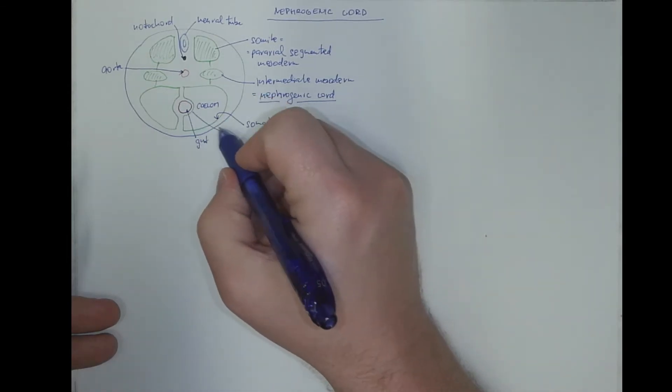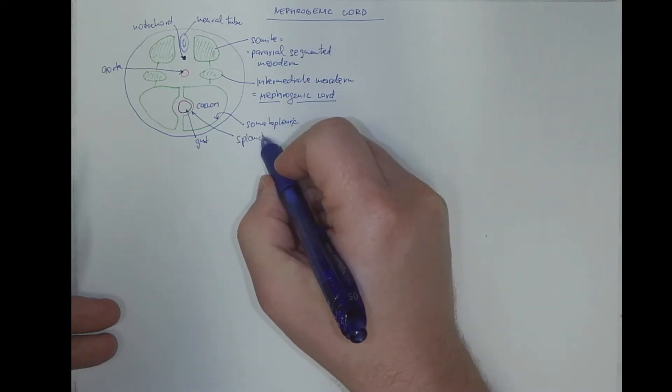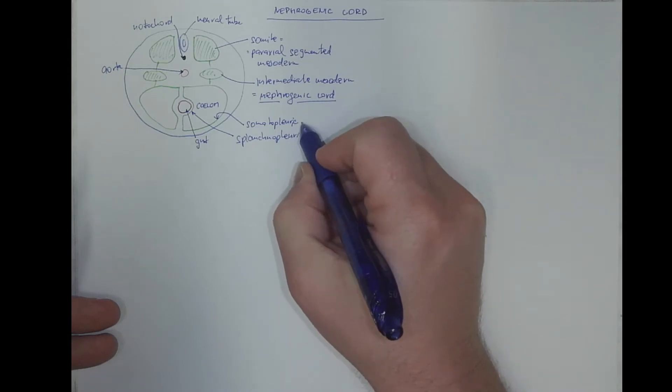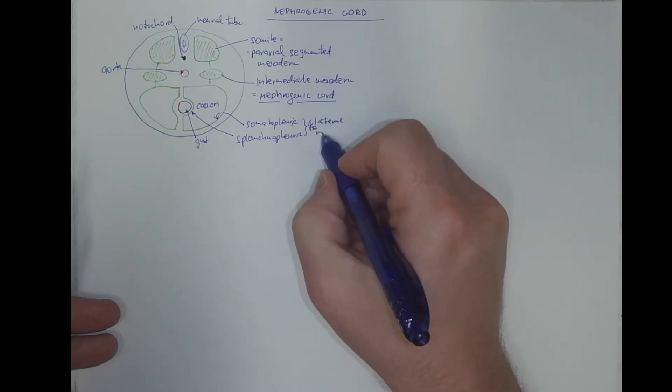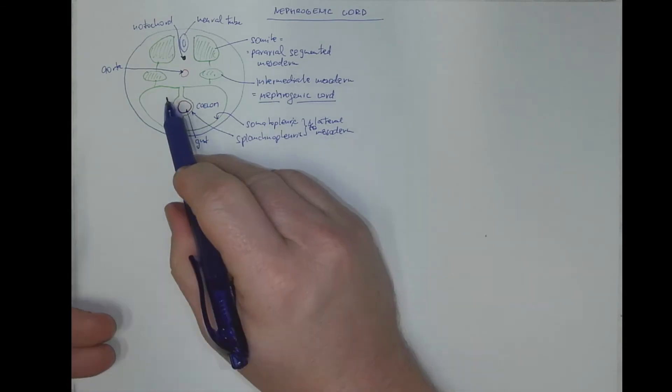And the visceral layer called splanchnopleuric mesoderm, lateral mesoderm. This is a cross-section.